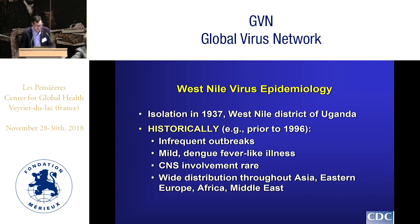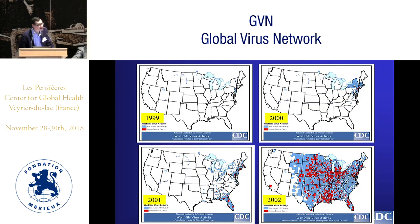West Nile virus is actually a fairly old virus, isolated in 1937 in West Nile, Uganda. Historically it's been associated with infrequent outbreaks of mild dengue-like illness with rare central nervous system involvement, and it had a wide distribution throughout Asia, Eastern Europe, Africa, and the Middle East. In 1996 there was a large outbreak in Romania associated with significant CNS involvement including encephalitis, meningitis, and anterior myelitis. The outbreak that really exemplified the change in epidemiology was its unexpected arrival to the United States in 1999.